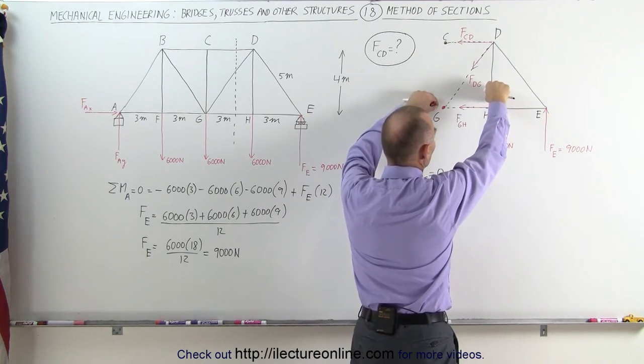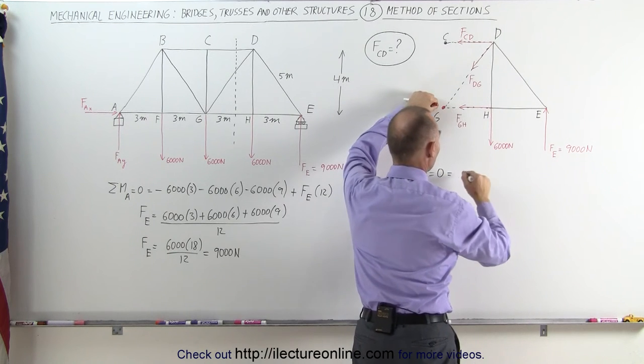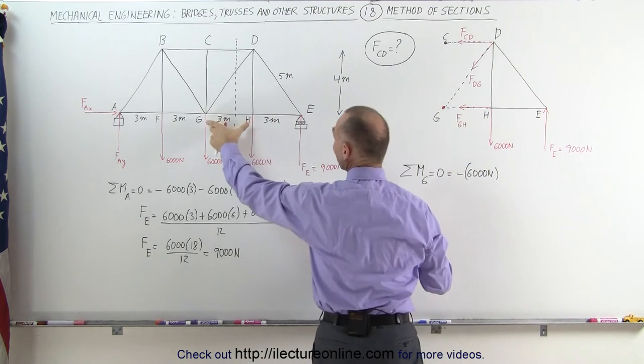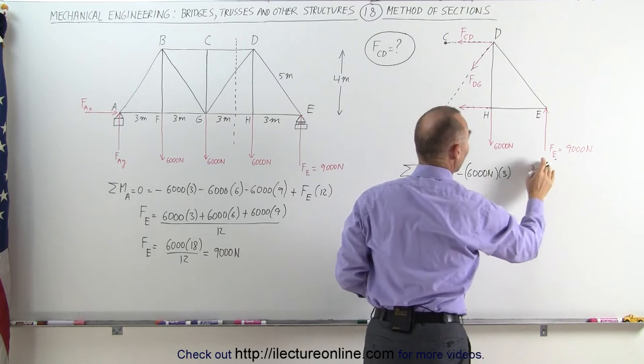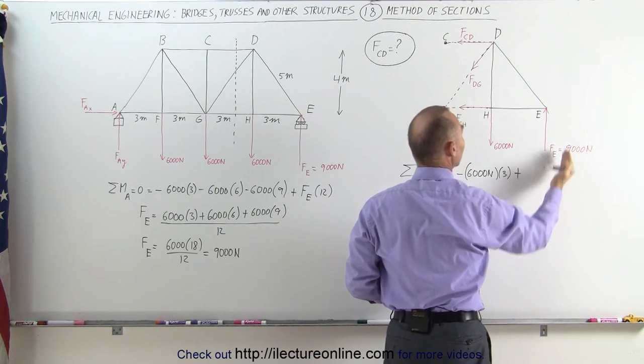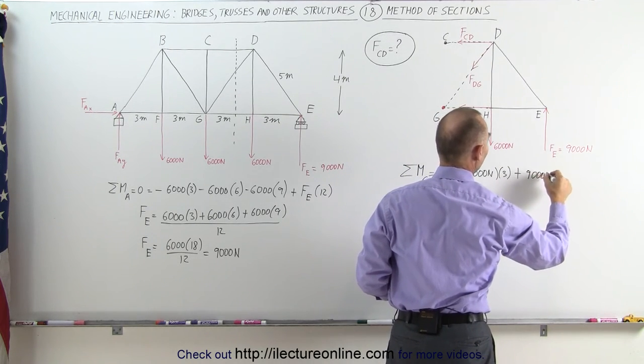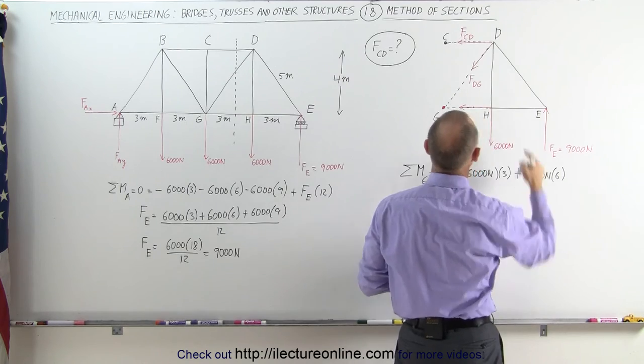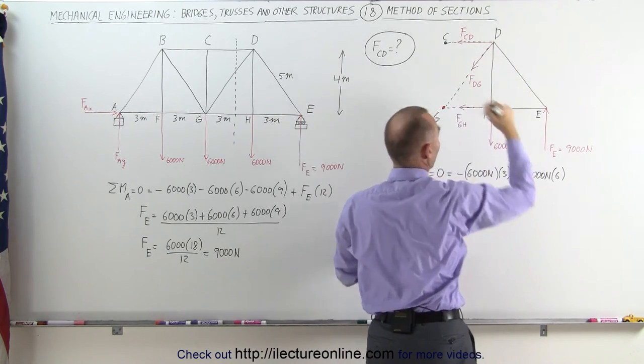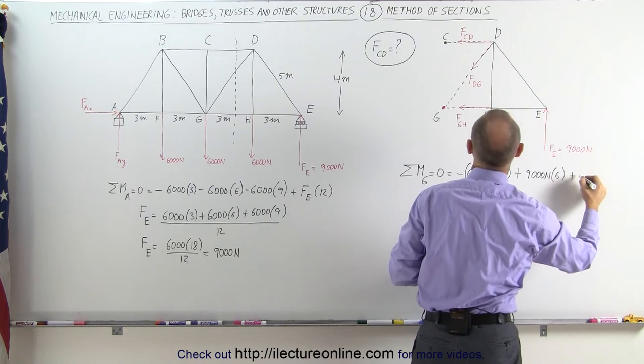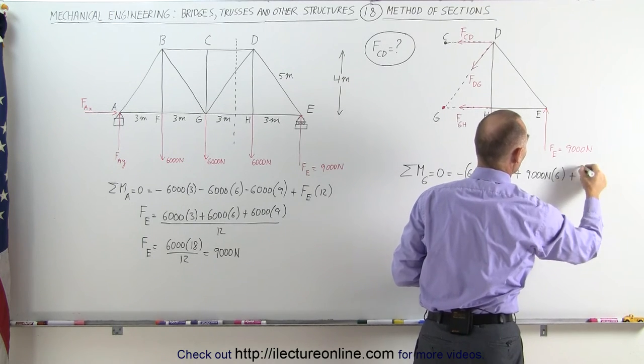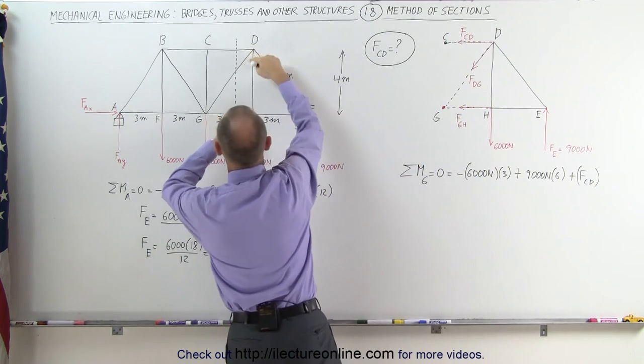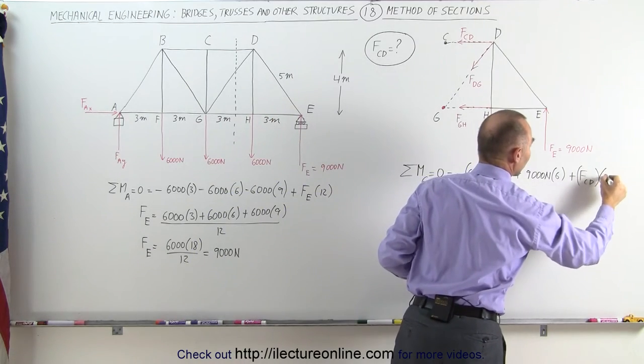So here we have the 6,000 newton force that causes the clockwise motion, that's minus 6,000 newtons, multiplied times this distance which again would be the same distance as there which is 3 meters. And we have a plus because that causes a counterclockwise motion, 9,000 newtons, multiplied times the distance here which is 6 meters. And then we have this unknown force which also causes a counterclockwise motion that would be plus FCD and the distance from the line of action of the force to the pivot point right here. That would be this distance here which is the distance of 4 meters, multiplied times 4.